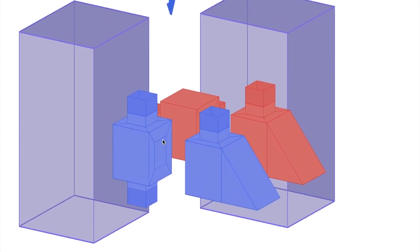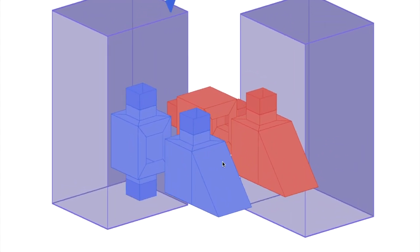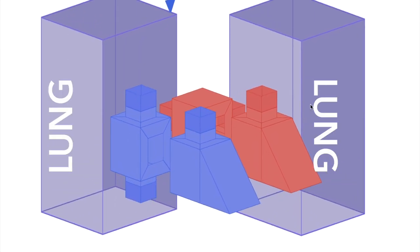Here again are our four chambers, right atrium and ventricle and left atrium and ventricle. Here are the lungs down the back.